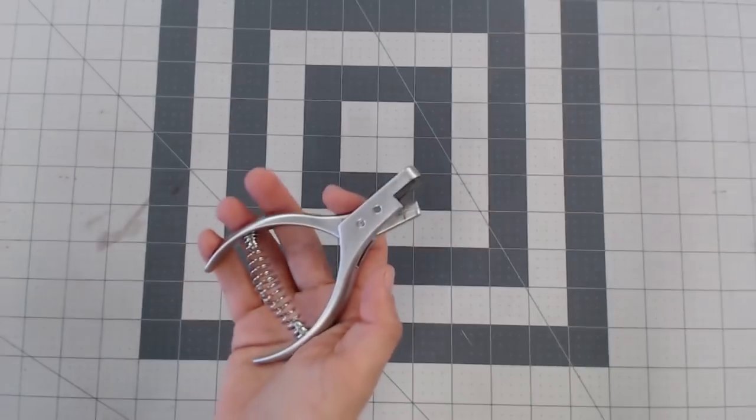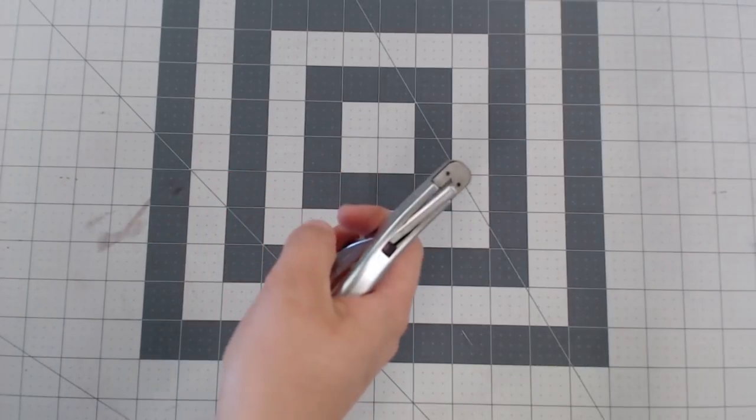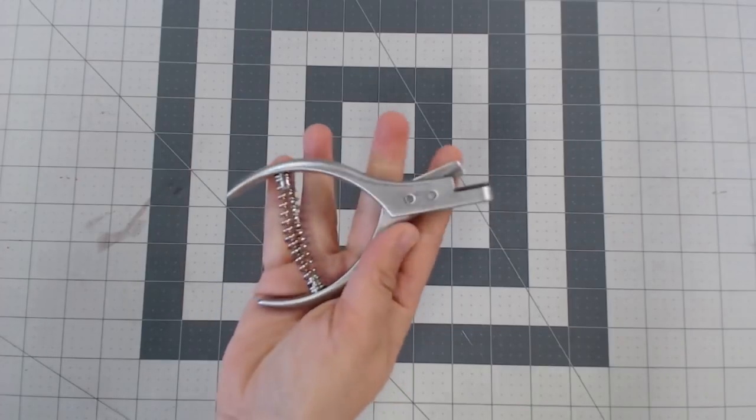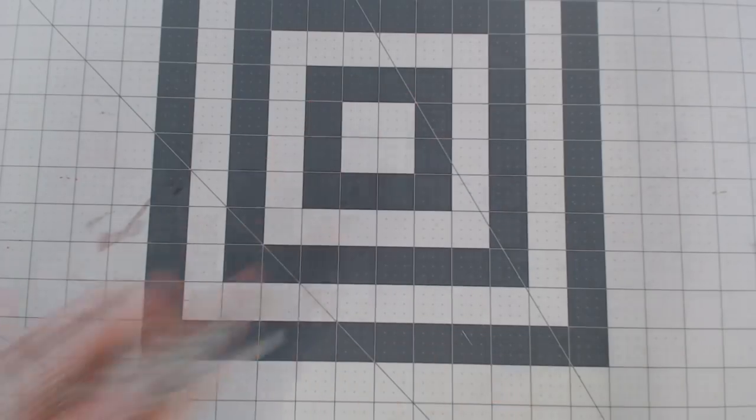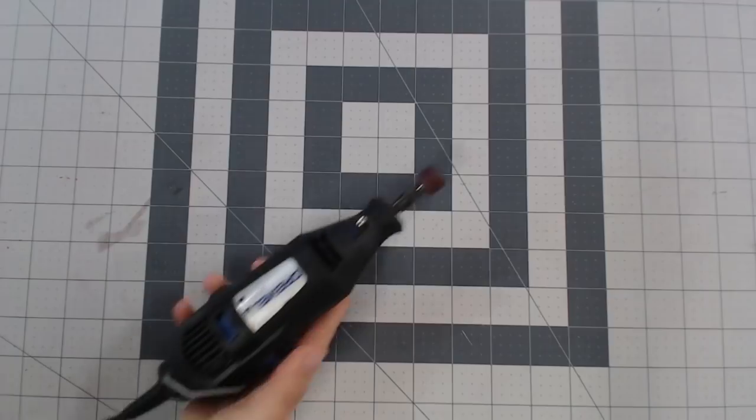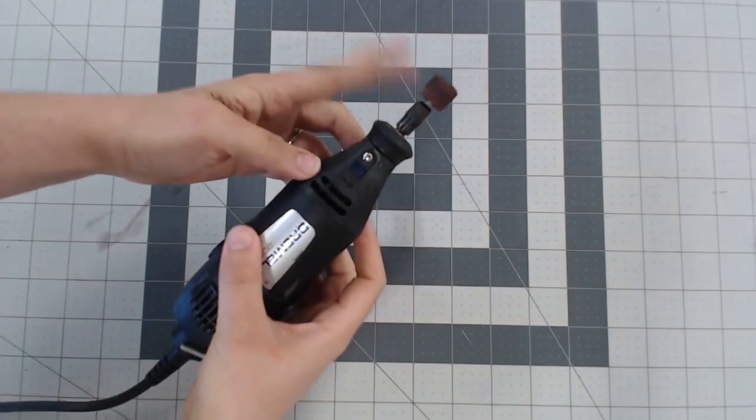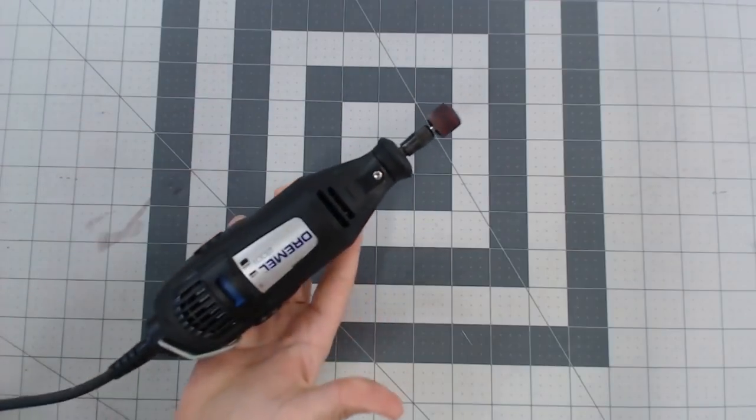Optionally, you can use one of these pattern notchers. I have a link in the description below. They're useful, but not necessary. Also, you'll maybe need a Dremel with a sanding drum bit. This isn't necessarily required, but will help you out a lot.